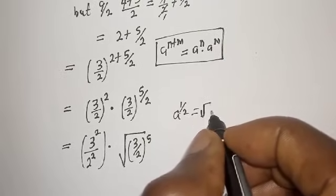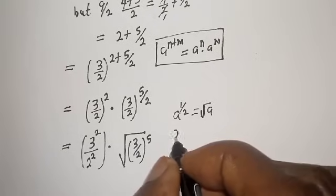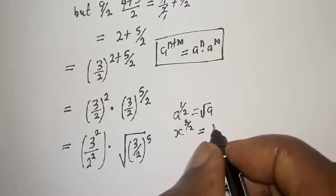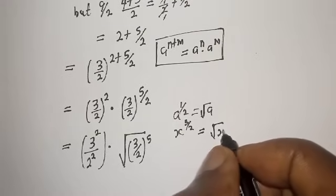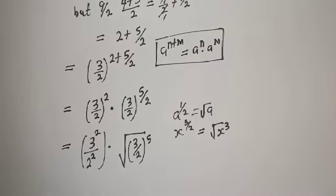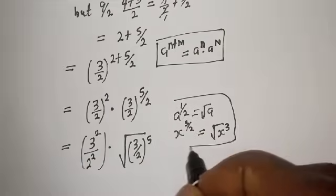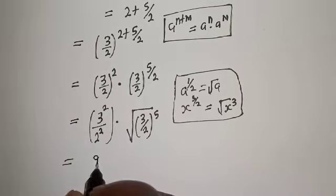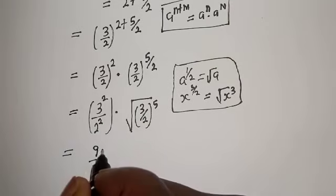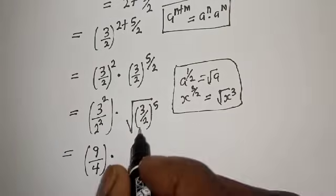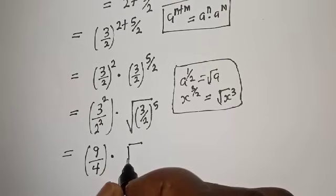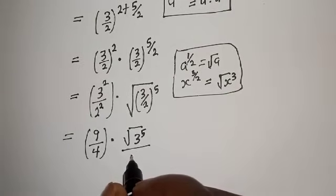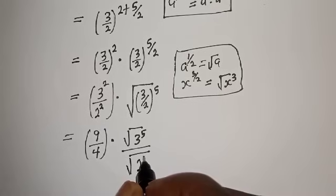Recall that if you have a raised to the power of 1/2, this equals the square root of a. So a raised to the power of 3/2 equals the square root of a cubed. Applying this, (3/2)^(5/2) becomes the square root of 3^5 divided by the square root of 2^5.